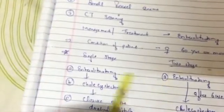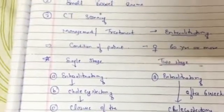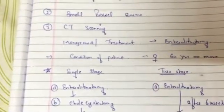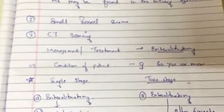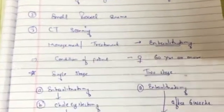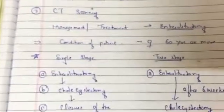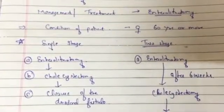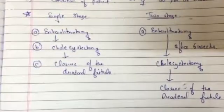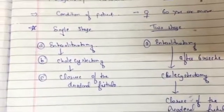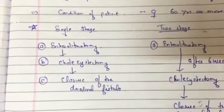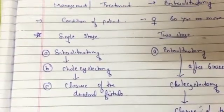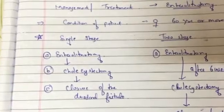In the two-stage operation, the patient's condition is not good enough to perform all steps at once. First, enterolithotomy is performed. Then there is a waiting period of six weeks. After six weeks, cholecystectomy is performed, and finally closure of the duodenal fistula is done. This concludes the video about gallstone ileus.